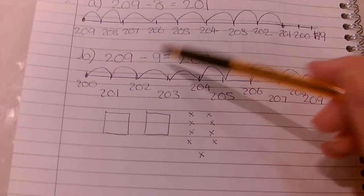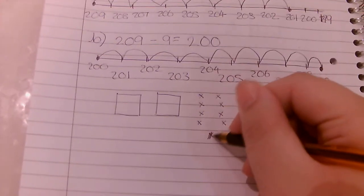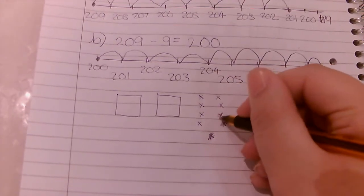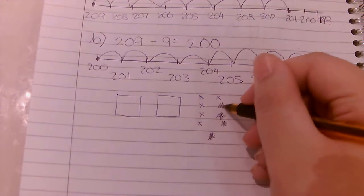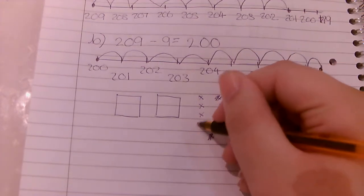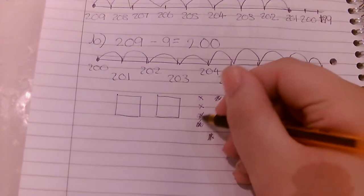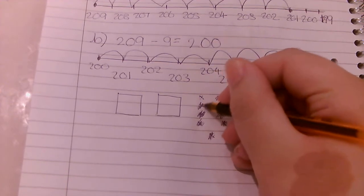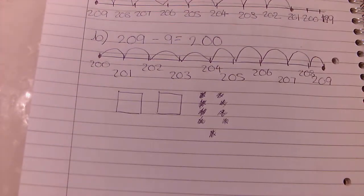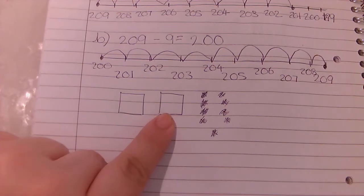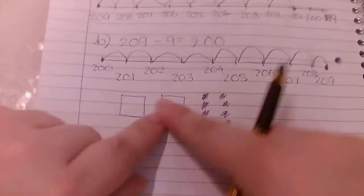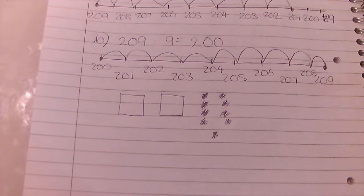So let's take away 9 ones. We're going to take away one, two, three, four, five, six, seven, eight, nine. Now what's left? I've just got two hundreds left, so yeah that's right, 200. That's it.